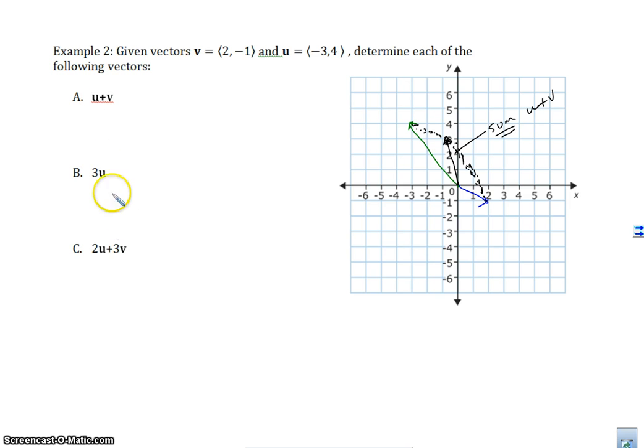How do we add them algebraically? Well, folks, this is probably the easiest thing you can do. All you've got to do is add the components together. That's right. So all you're doing is you're adding the x components and the y components. So u plus v is negative 3, 4, that's u. And v is 2, negative 1. Guys, this is just simple. Add negative 3 and 2. Negative 3 plus 2 is negative 1.